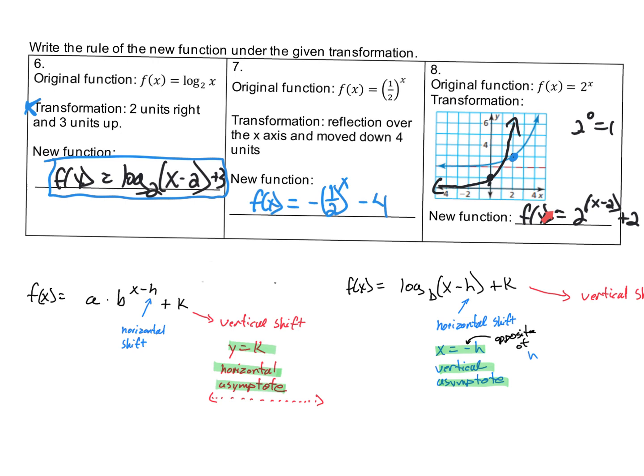If you plug in x = 2, then 2 - 2 = 0, and 2^0 = 1. Then 1 + 2 = 3, which gives you the point (2, 3). It's that transformation where it's over 2 to the right and up 2.